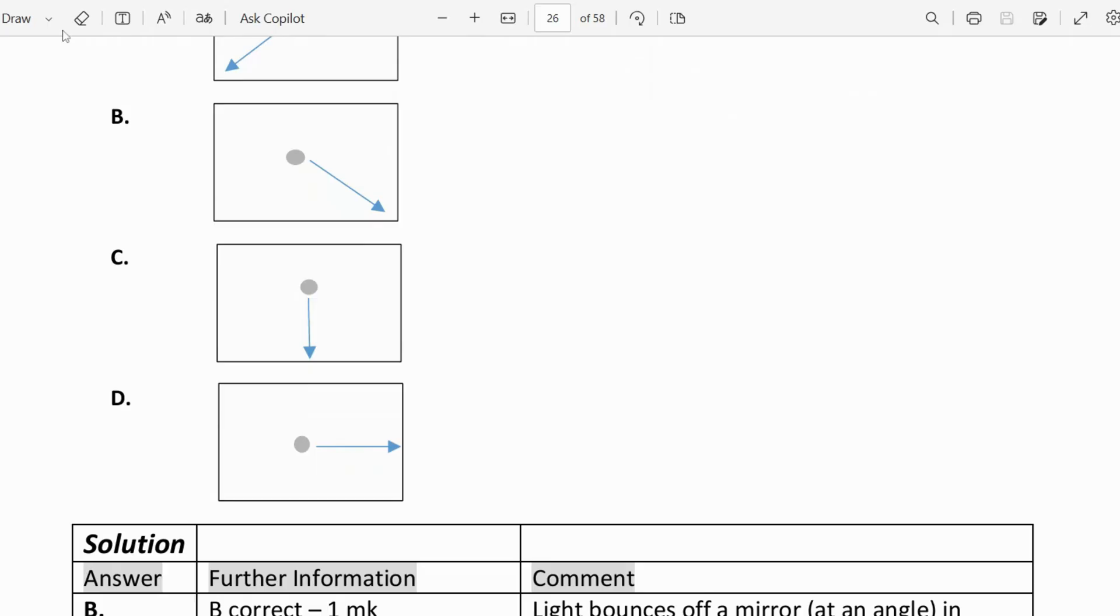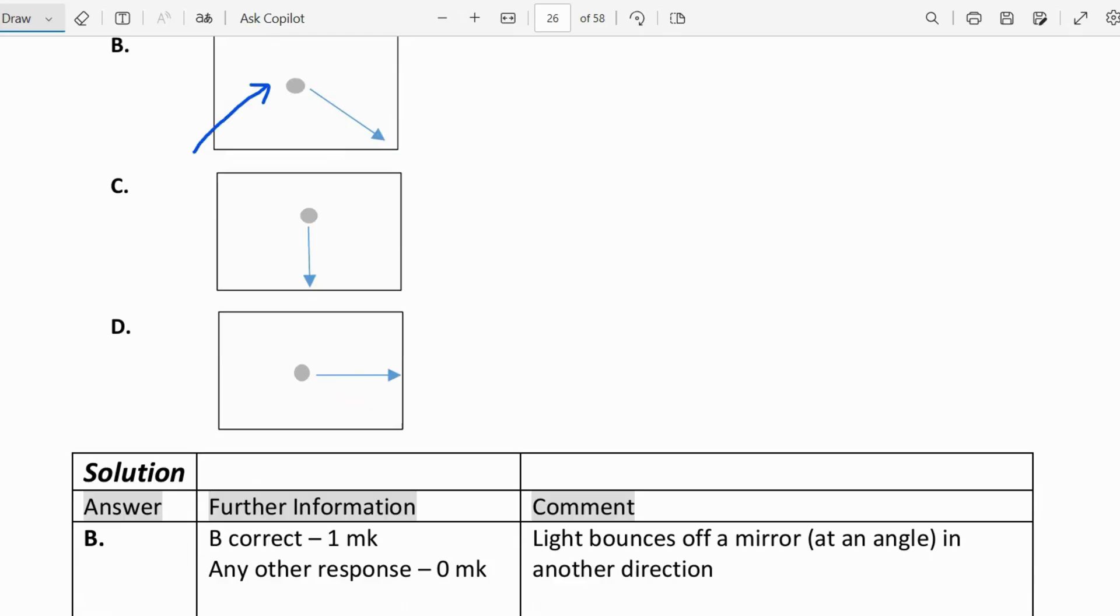I'm just going to draw it on the same B diagram. So if the light ray came in this way and hits the mirror, typically it will bounce back in the other direction. It bounces off the mirror at an angle in the other direction, or the opposite direction where it came. And that's why B is the correct answer.